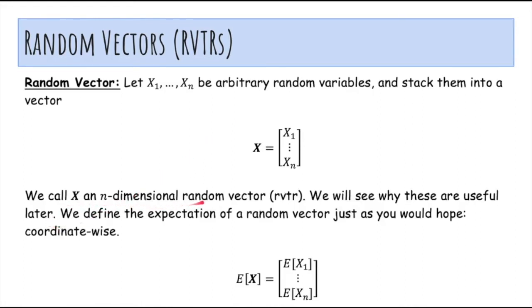So x is an n-dimensional random vector here, and we'll see why these are useful later. We define the expectation of a random vector just as you would hope, coordinate-wise. So the expectation of the random vector x, each element is just the expectation of some x_i.